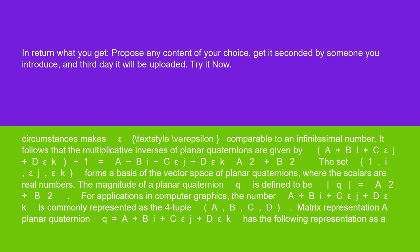The magnitude of a planar quaternion Q is defined to be |Q| equals sqrt(A^2 plus B^2). For applications in computer graphics, the number A plus Bi plus C epsilon J plus D epsilon K is commonly represented as the four-tuple (A, B, C, D).